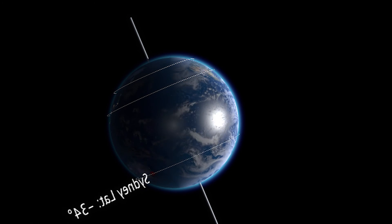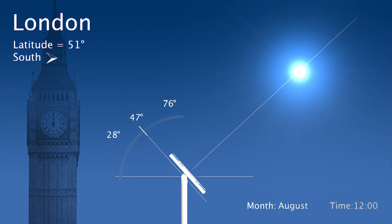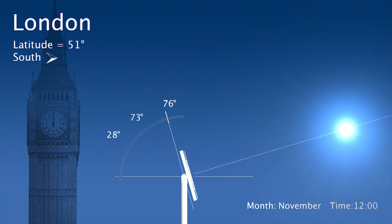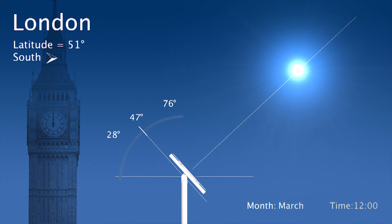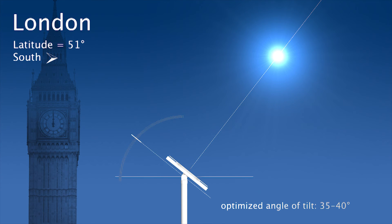We will first go to London. London has a latitude of around 51 degrees. Consequently, the range of tilt angles throughout the year for a panel tracking the sun varies from 28 degrees to 76 degrees. The panel in this case is oriented towards the south. The optimized angle of tilt will be 35 to 40 degrees facing south.